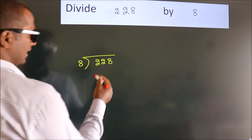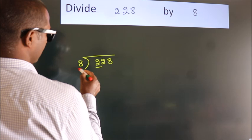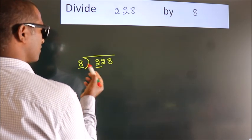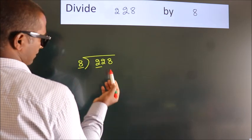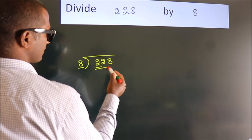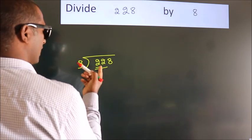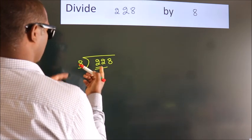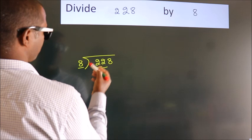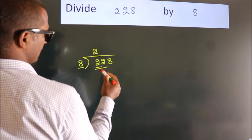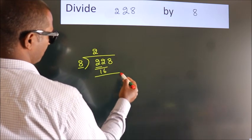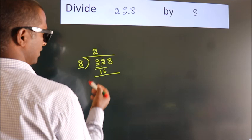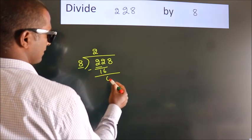Next. Here we have 2, here 8. 2 is smaller than 8, so we should take 2 numbers: 22. A number close to 22 in the 8 table is 8 twos, which is 16. Now we subtract and get 6.